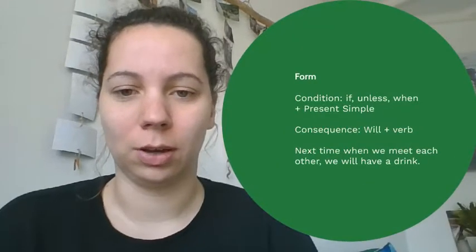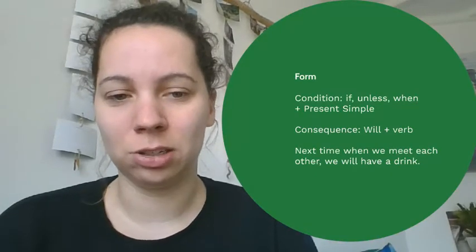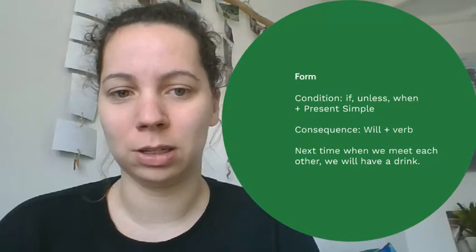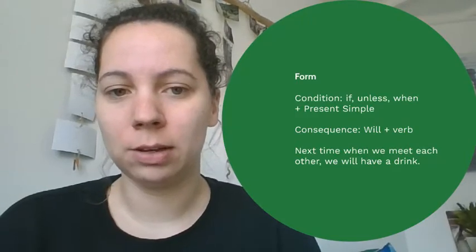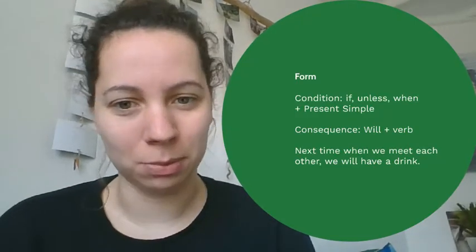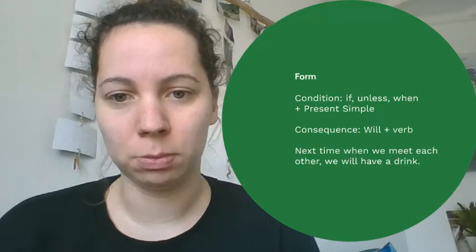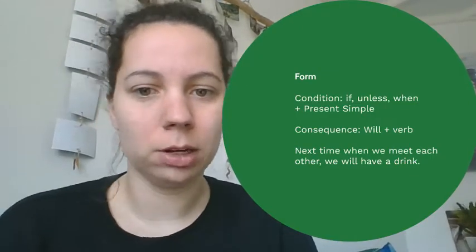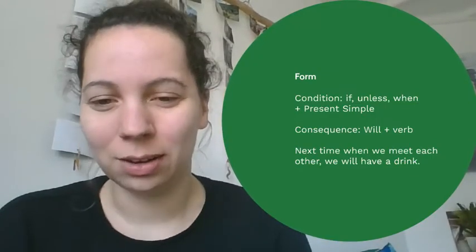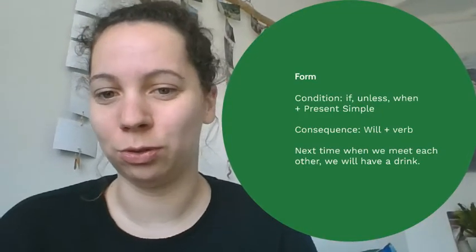Let's move on to the form, because that's where it becomes relevant. There are two parts: the condition part, which we recognize because it starts with 'if,' 'unless,' or 'when.' In type one — the only type you need to know right now — the verb in the condition part needs to be in the present simple. The consequence part will have 'will' plus verb.